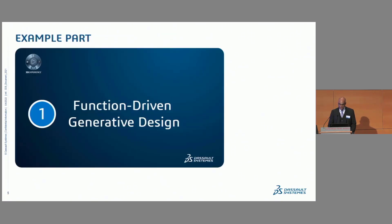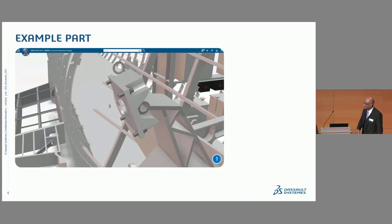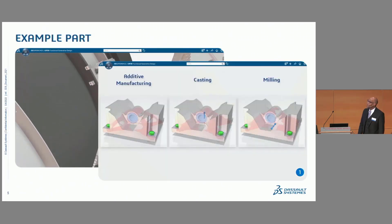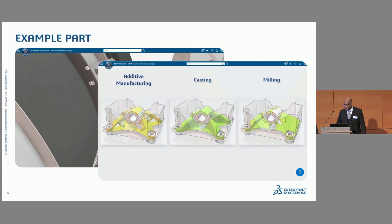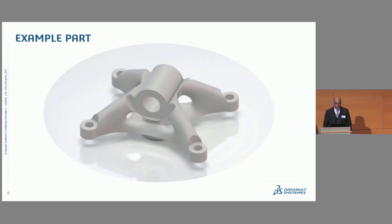The part we are looking at today is something you may have seen before from the presentation on generative design. Right now it's facing us — it's this so-called joiner, a part in the center. In previous presentations, we went through this part all the way from initial design to optimization for additive manufacturing, casting, or milling. Since we're talking about additive manufacturing, we're choosing the variant associated with additive manufacturing. This part will accompany us throughout this presentation.